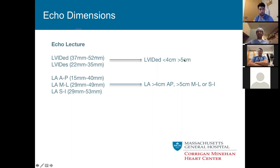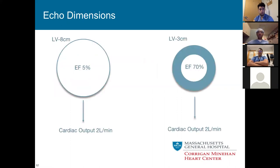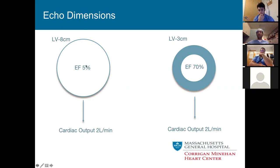Why does LV size matter? The ejection fraction, although useful, doesn't tell you the entire story. There are essentially two different ways a patient can be in heart failure. Everyone will report an EF of 5% and say the heart is bad, but if you take the stairs up to the advanced heart failure unit you'll notice most of those patients have EFs between 5 and 20 percent — yet they're not in shock on high-dose vasopressors. As Greg Lewis likes to point out, they have a big 8 cm ventricle.